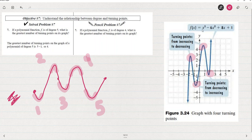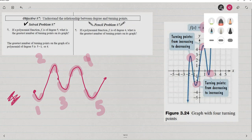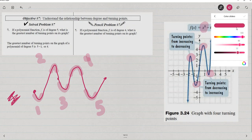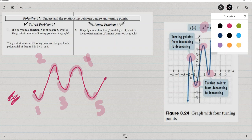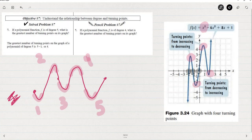Now that number of turning points has something to do with the lead term, or more specifically with the degree. This polynomial is degree five, which means that it has at most, not guaranteed to have this many, but at most one, two, three, four, five zeros.